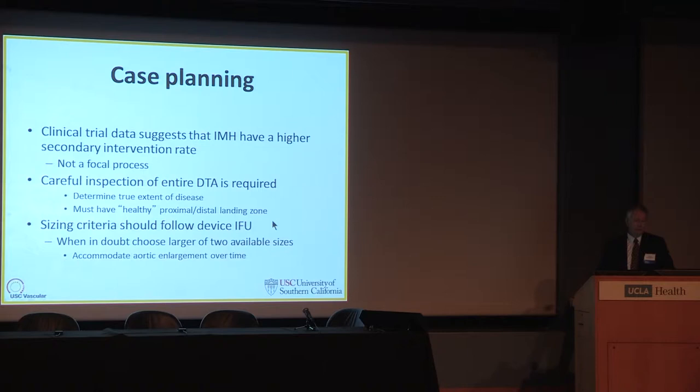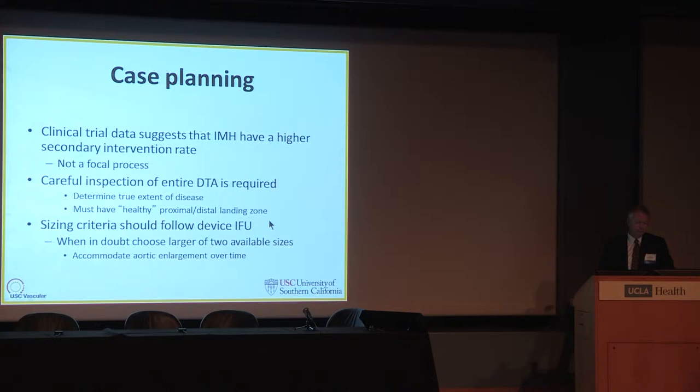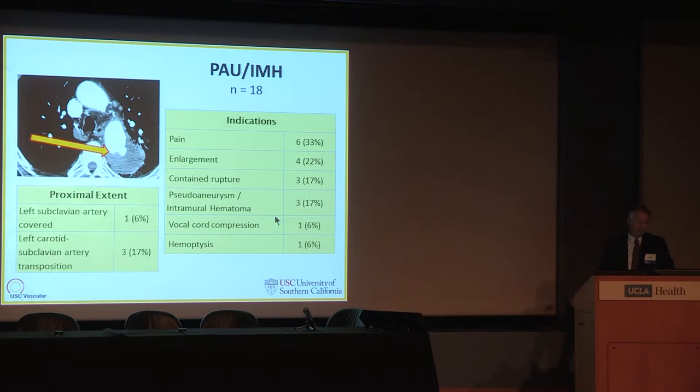When doing case planning for thoracic endovascular repair, keep in mind that patients with intramural hematoma have a higher secondary intervention rate, so surveillance is very important. Careful inspection of the entire descending thoracic aorta is required to determine the true extent of disease and identify healthy proximal and distal landing zones. Sizing criteria should follow device IFUs, and when in doubt, choose the larger of the available devices.